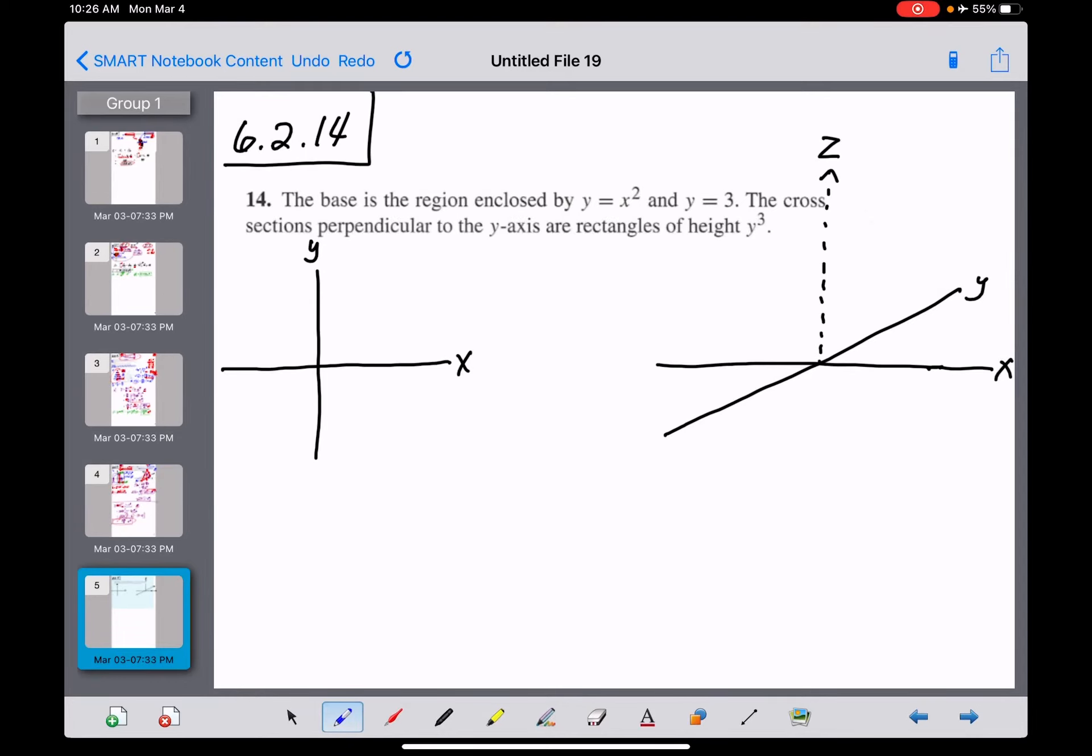Okay, let's check out number 14 here. The base is a region enclosed by y equals x squared, so that's a pretty normal parabola opening upward with its vertex at the origin like that, and then y equals 3, so we have a horizontal line right over there. Those two functions create one particular region for us right here, so I'm just going to shade in yellow here. What we have is the base of our region here.